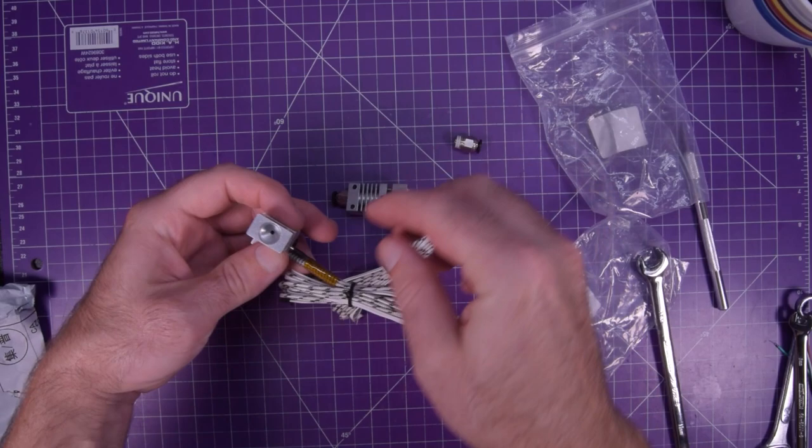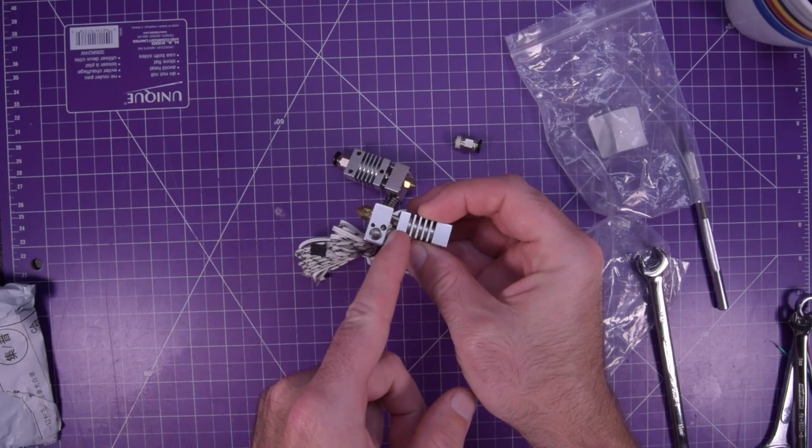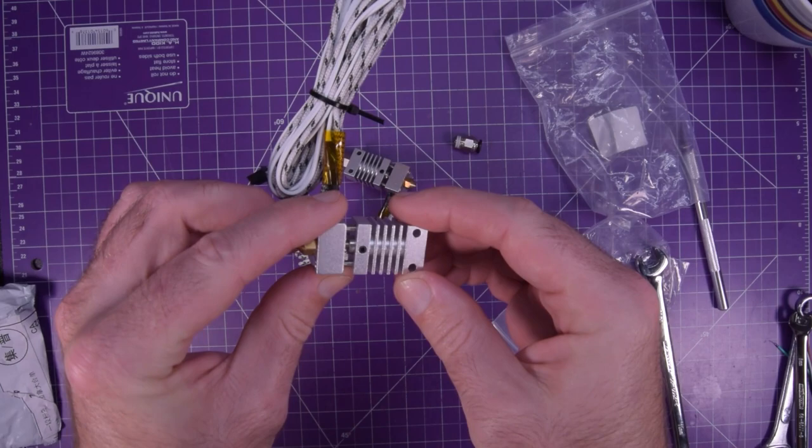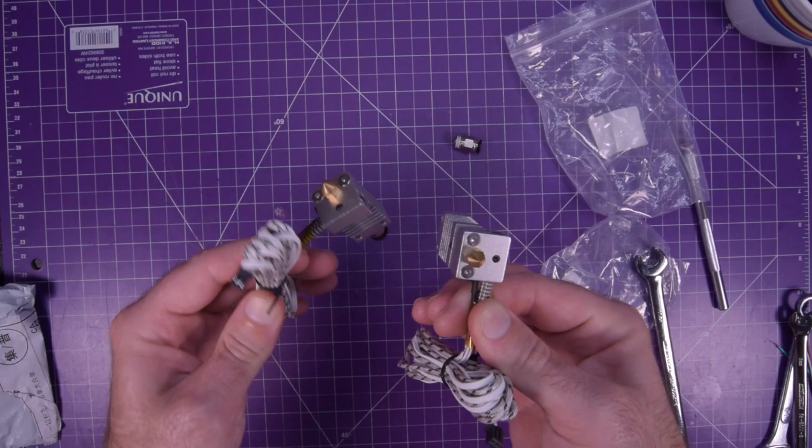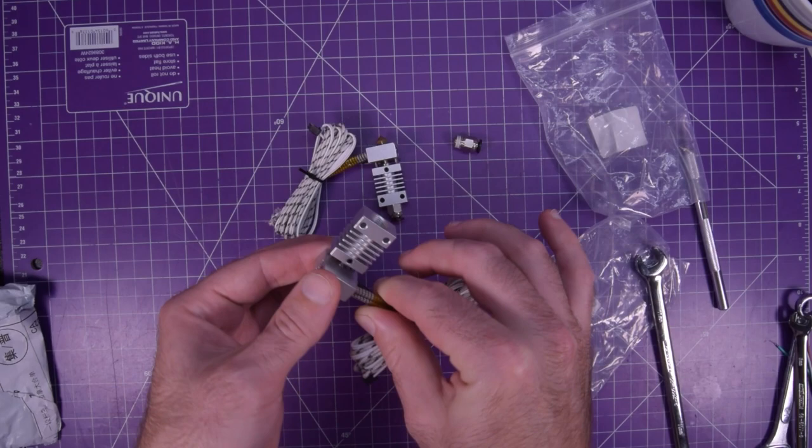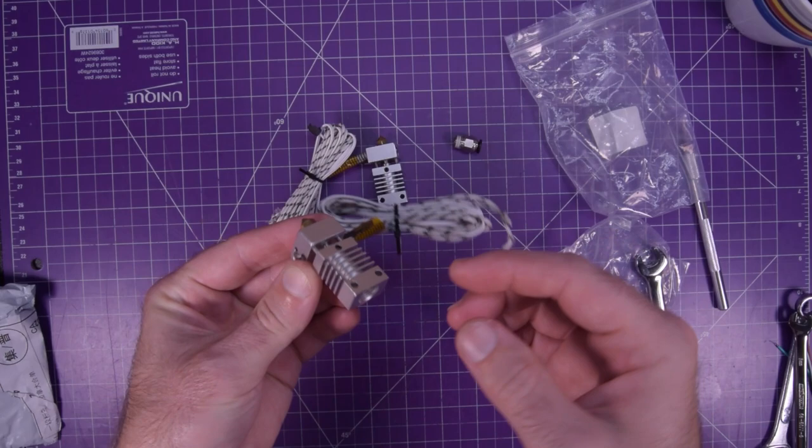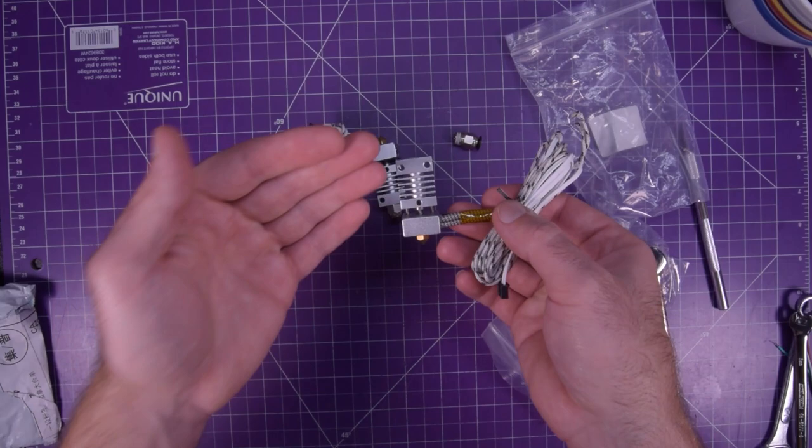These guys don't have the PTFE tubing going all the way down to right near the throat. And so you can print things like PETG a lot easier with this without worrying about melting the PTFE tubing. I have been starting to print with PETG, which has been great. The only thing is I just worry about overheating the tubing.